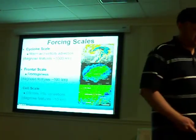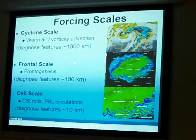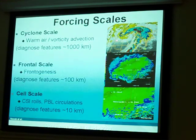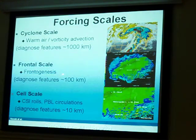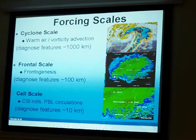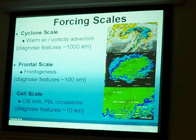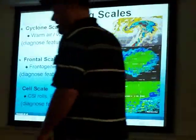We look at the scales of forcing for ascent to get your precipitation going. You have the cyclone scale, where you're looking at warm air advection or vorticity advection. Then you pick out things like your conveyor belts — your warm conveyor belt, your cold conveyor belt. You get down into the frontal scale, where frontogenesis on the scale of 100 kilometers, sometimes less, produces these banding features. And then even on the cell scale — a really small scale, just 10 kilometers or less. But what we're focused on here is the frontal scale, which has to do with mesoscale meteorology.